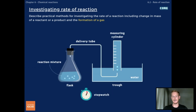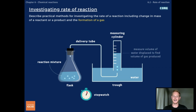Alternatively, a delivery tube can be directed from the flask to an upside-down measuring cylinder filled with water. This method is referred to as downward displacement, because as gas collects in the cylinder, an equal volume of water is displaced. Record the volume of gas in the cylinder at regular time intervals and plot your results on a graph.